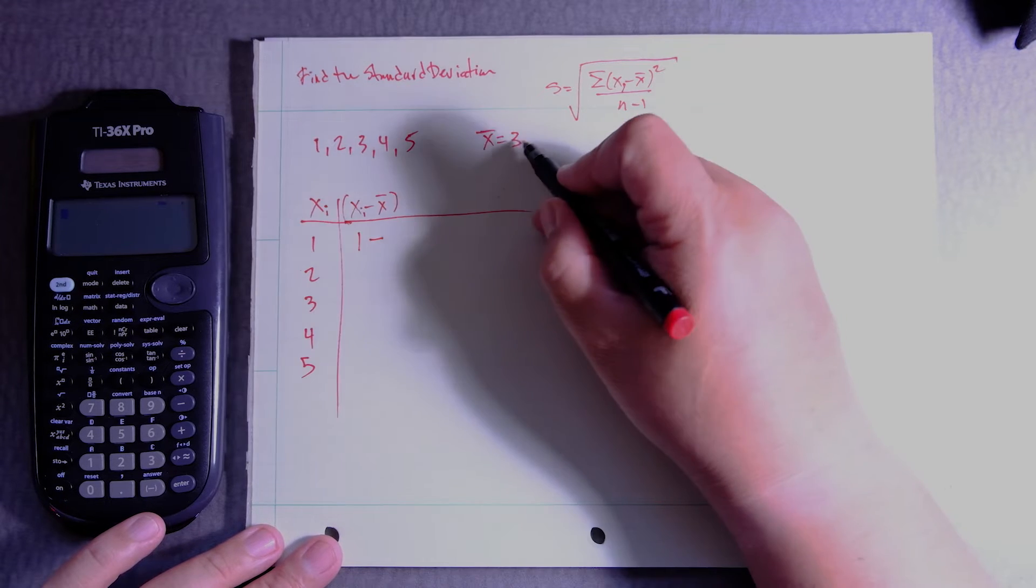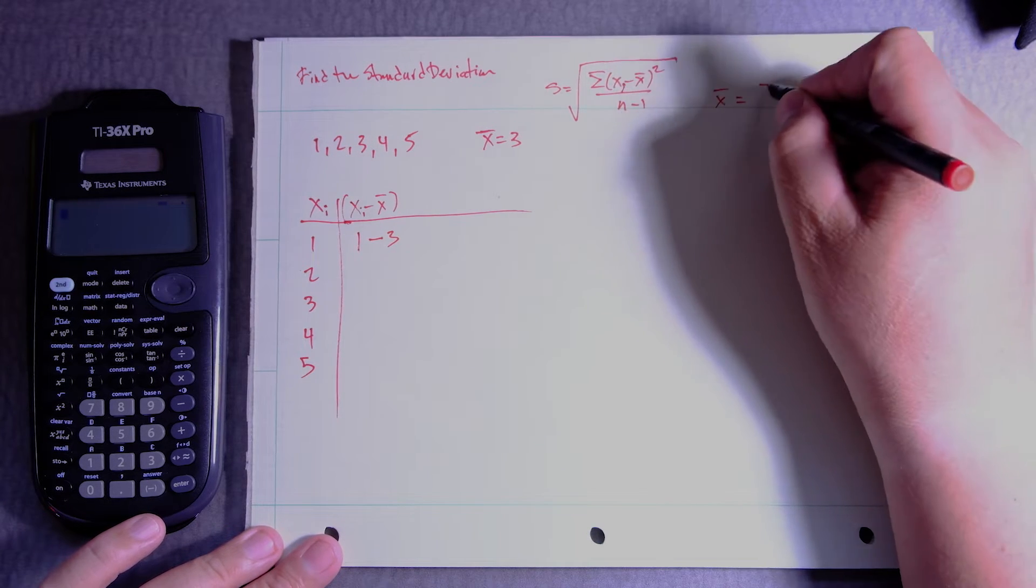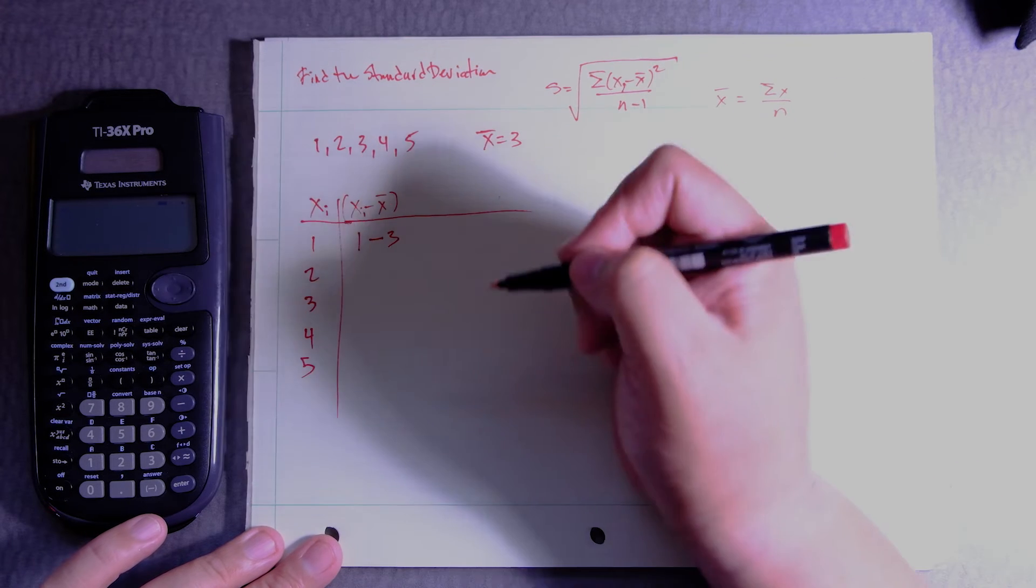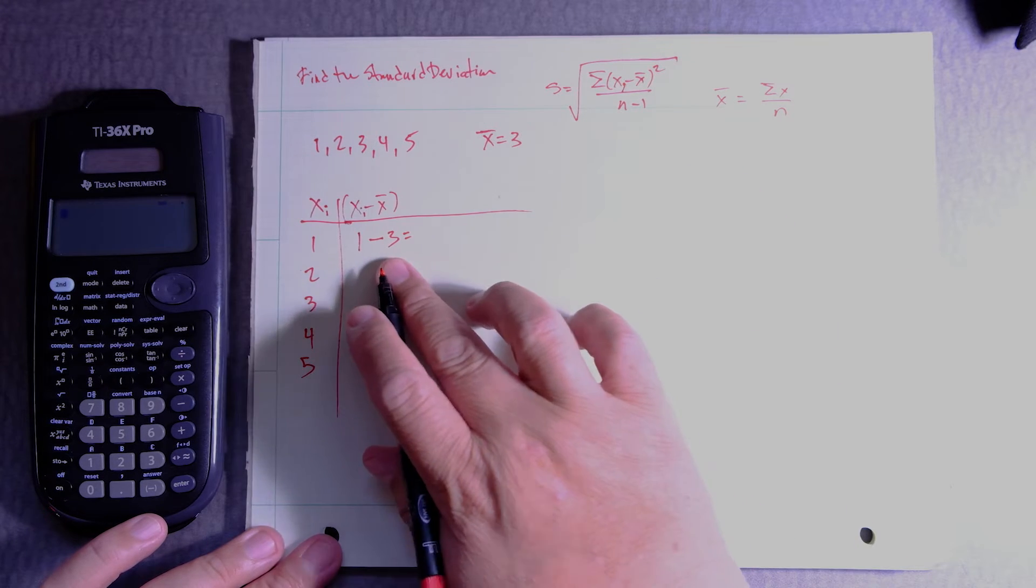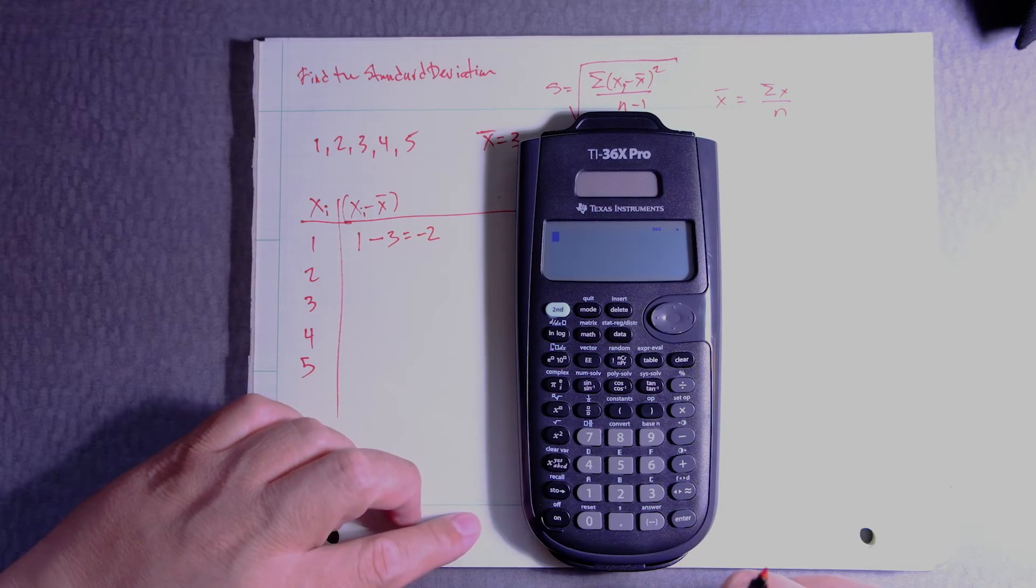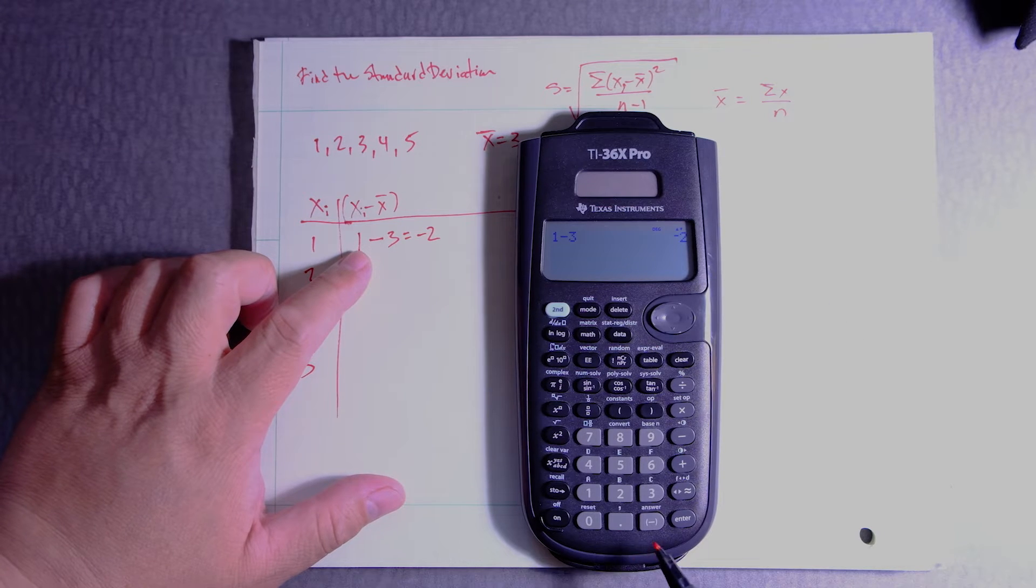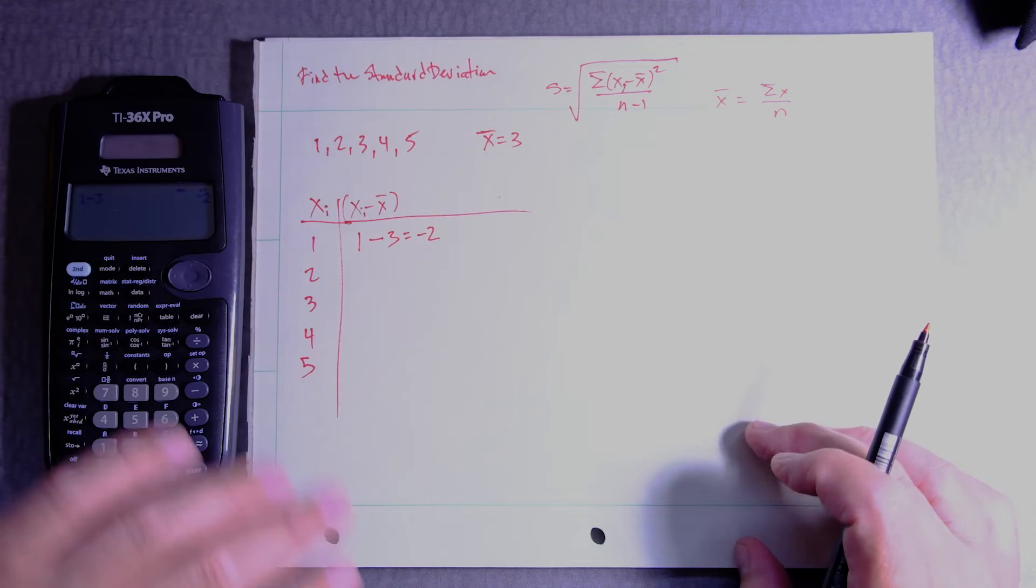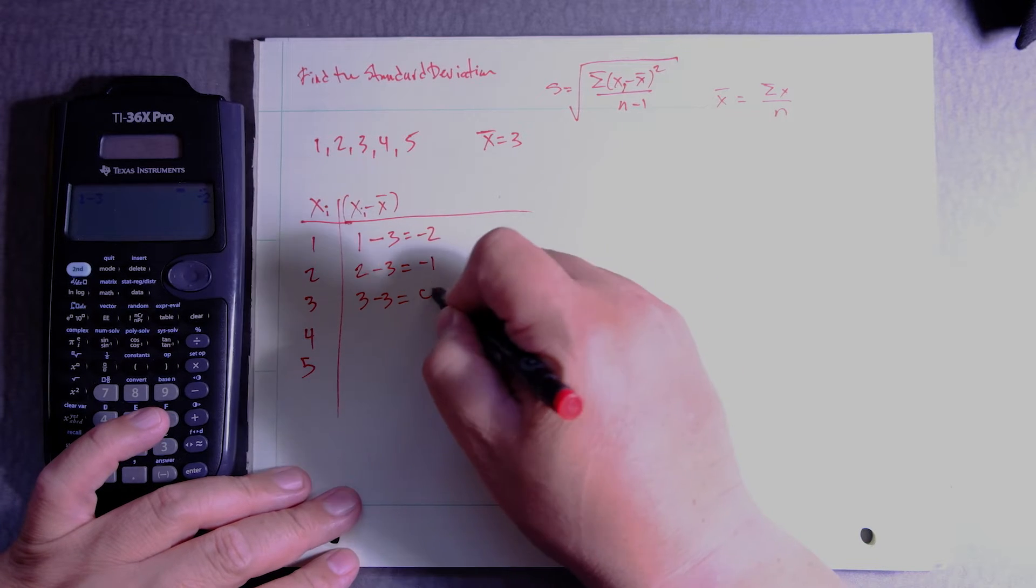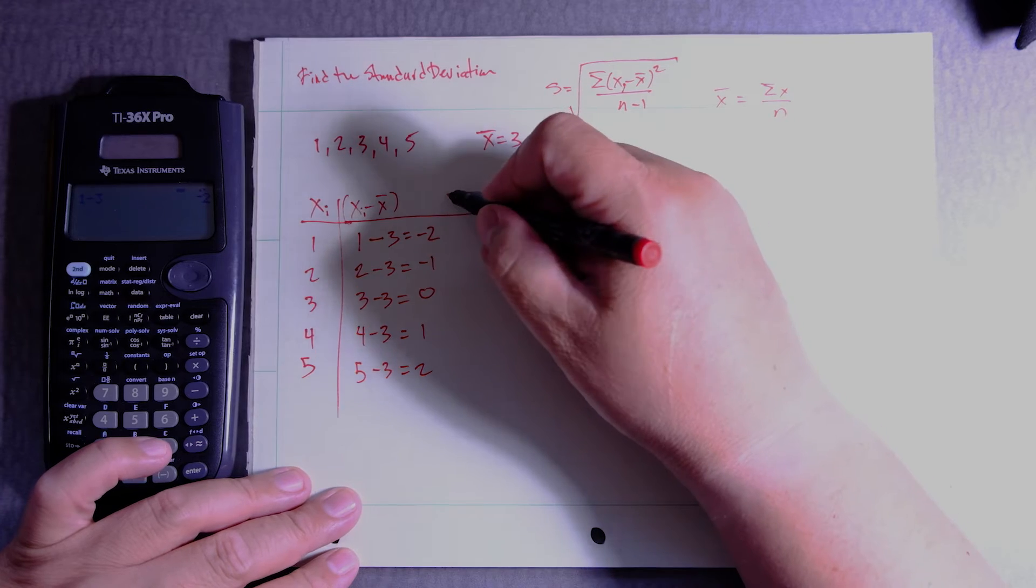So xi, meaning 1, take away x bar is 3. If x bar is not available, you can always calculate it separately. x bar is equal to the sum of x divided by n. So here you could put parentheses if you like or you can just say equals to 1, take away 3, it's negative 2. Now to do that in your calculator, 1 take away 3, enter and you can see it's minus 2. Make sure you don't use this button right here, it's the take away sign. And then 2 take away 3 equals negative 1, 3 take away 3 is equal to 0, 4 take away 3 is equal to 1 and 5 take away 3 is equal to 2.